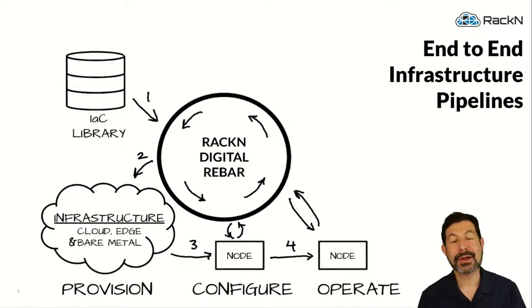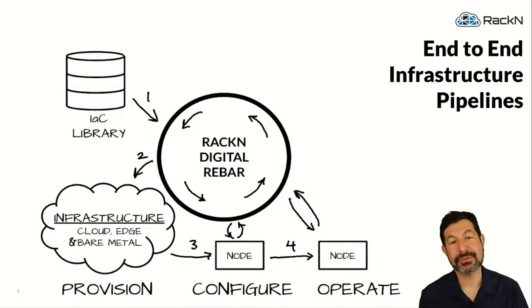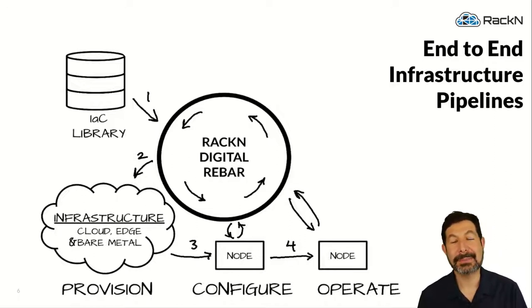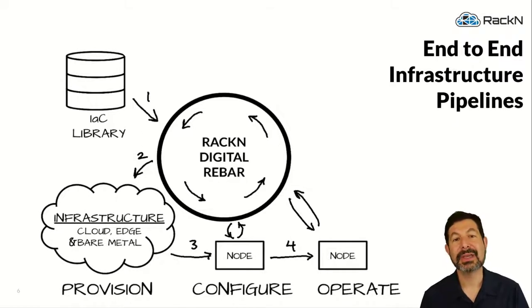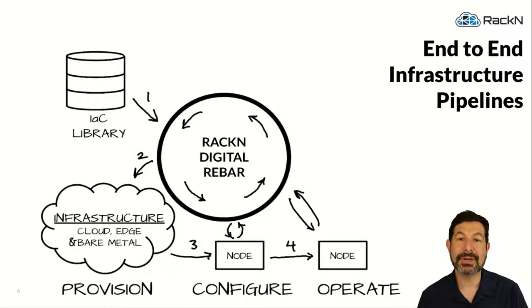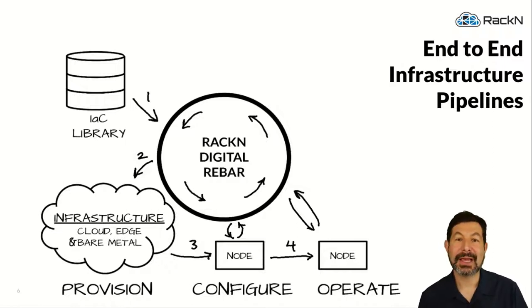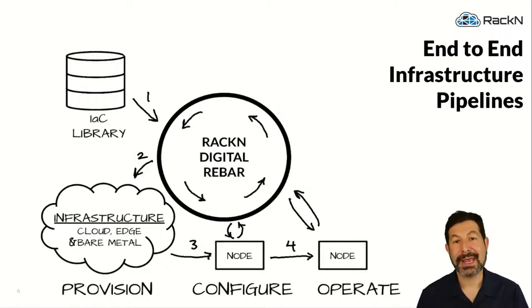From there, we have to be able to switch into operational mode — out of workflow and into work orders — to allow the node to be patched, updated, continuously checked, monitored, commissioned, and reviewed. That essential component of this end-to-end pipeline allows us to not just do provisioning and setup, but actually run and maintain.